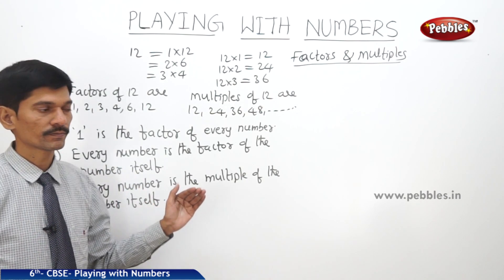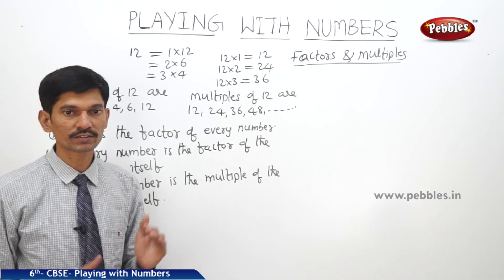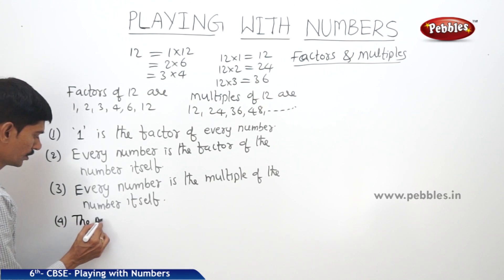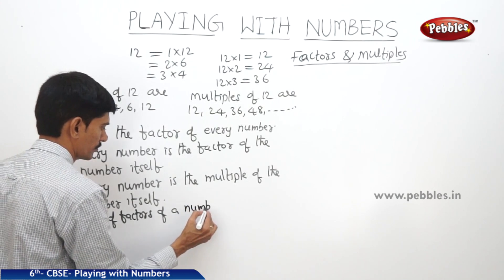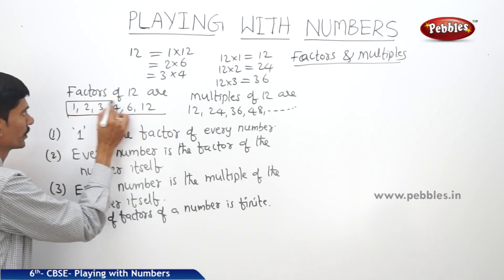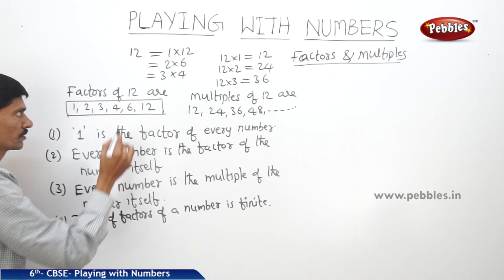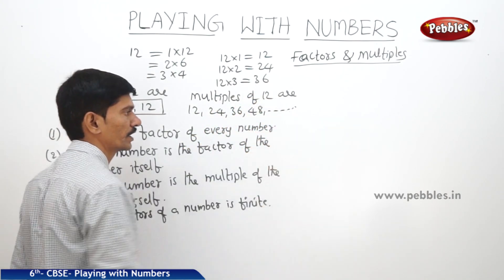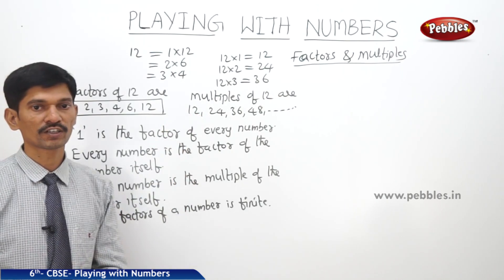Every number is the greatest factor of the number itself, and every number is the multiple of the number itself. So every number is the least multiple of the number itself. The fourth property: the number of factors of a number is finite. So we can write only a finite number of factors of a given number — for 12 they are 1, 2, 3, 4, 6, and 12. But the number of multiples of a given number is infinite, since the given number can be multiplied by infinitely many natural numbers.